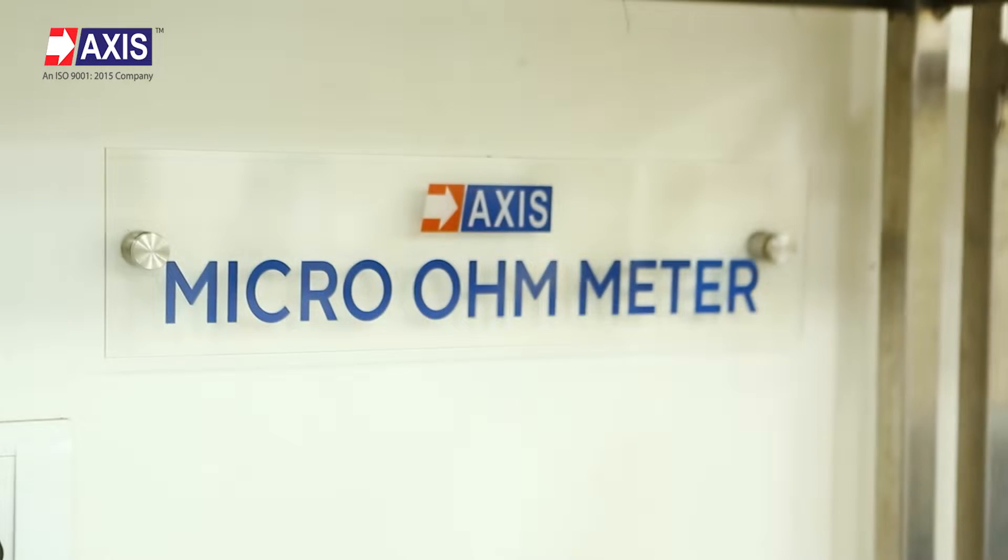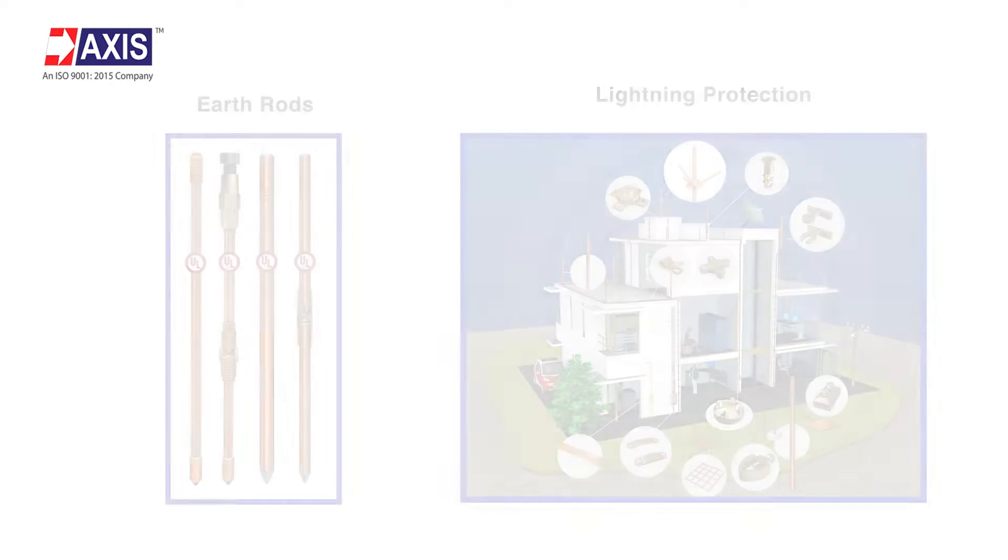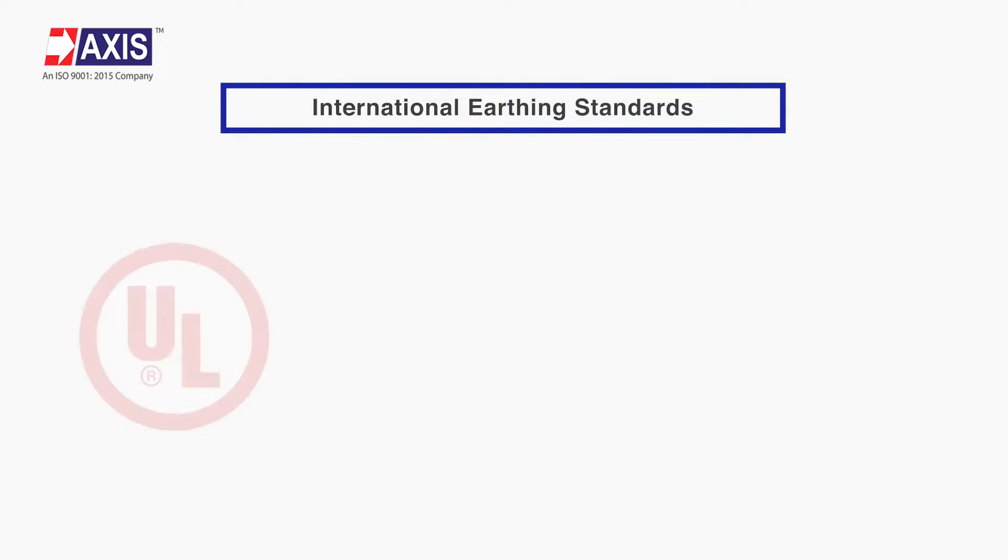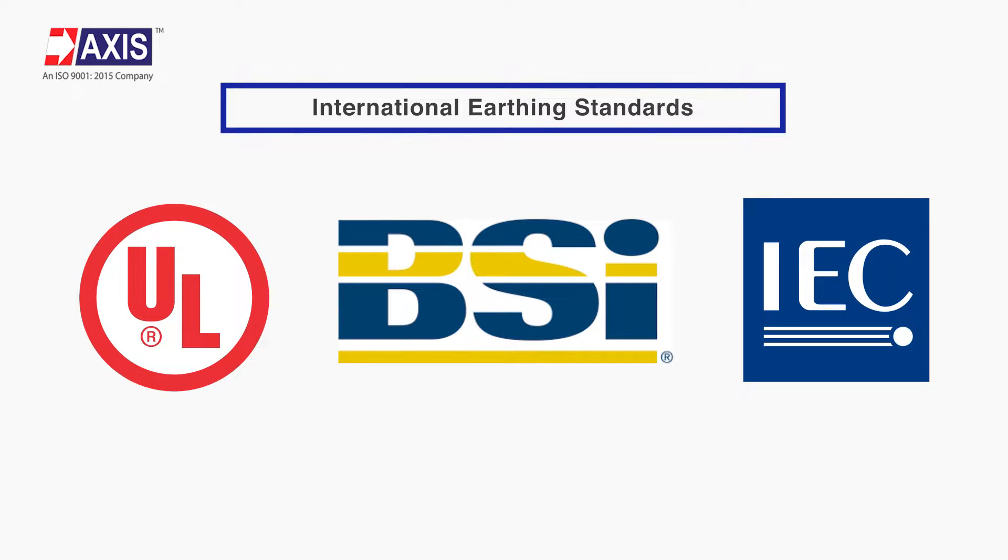In this video, we will explore how electrical resistance is measured for earth rods which are used in earthing and lightning protection projects. This test ensures that the earth rods manufactured at Axis meet the resistivity levels mandated by international earthing standards.